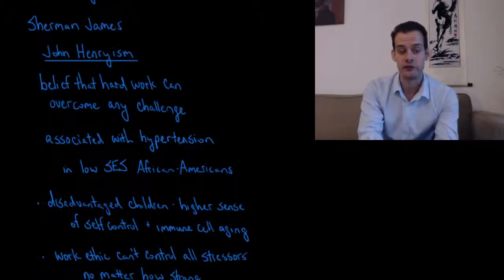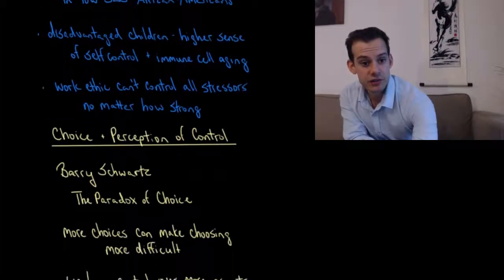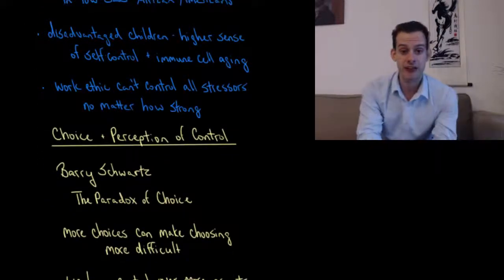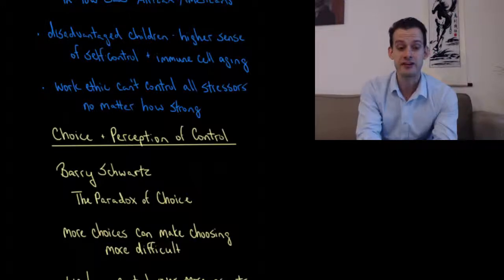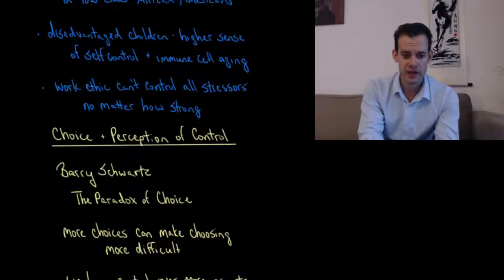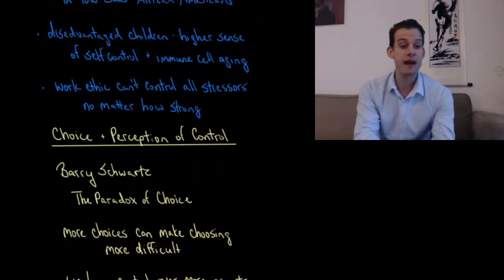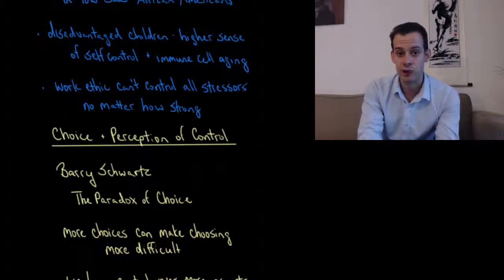A similar idea has been shown in research by Greg Miller and colleagues, which found that disadvantaged children from lower socioeconomic status backgrounds who had a higher sense of self-control, they had a greater feeling of control, this was actually associated with more rapid immune cell aging in these children. And so this is a reminder that our work ethic can't confront all stressors. It doesn't matter how strong it is. We remain vulnerable and there are some things that are out of our control and believing that we have control over them might just lead us to blame ourselves if we fail.